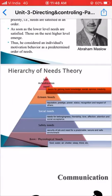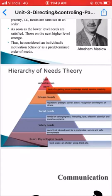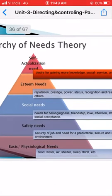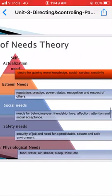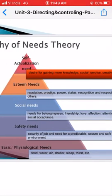The second level is safety needs — security of job and a need for a predictable, secure, and safe environment. Once basic needs are satisfied, the employee works efficiently and effectively to secure their job and achieve a safe environment. The third level is social needs, including belongingness, friendship, love, affection, attention, and social acceptance.